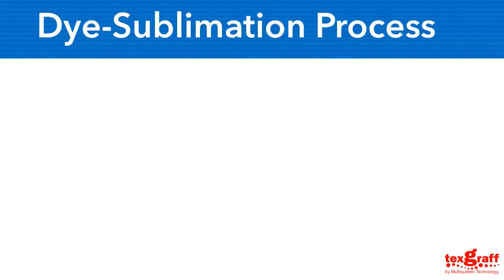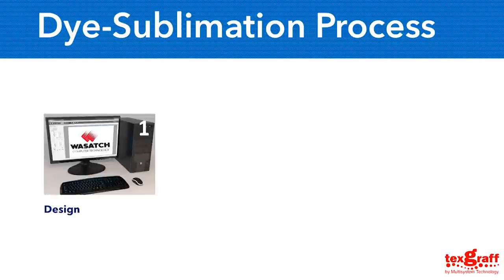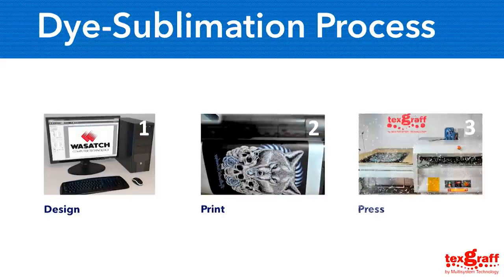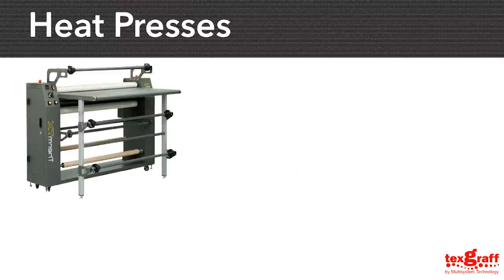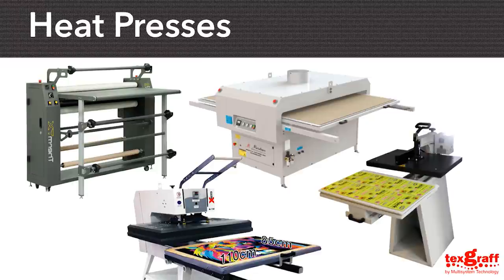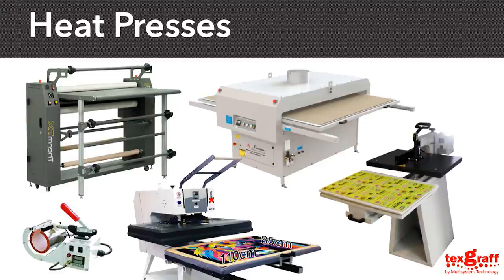The dye sublimation process is similar to the DTG printing process. First, design your artwork and open it in the RIP software. Second, print your design on the transfer sublimation paper — you can control the settings and quality similar to DTG. Lastly, sublimate using a flat heat press like the Xpress M110 or a roll-to-roll calendar like the Therm-TX 44, and the image will be transferred from the paper to the fabric. The calendar heat press does roll-to-roll, sheet-to-roll, and sheet-to-sheet. Manual heat presses can be used for textile and hard surfaces, unlike the calendar which cannot do hard surfaces. There is also an automatic flatbed heat press for higher production, and a mug heat press which only applies to mugs.